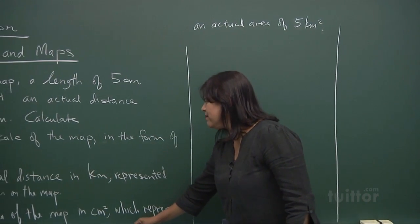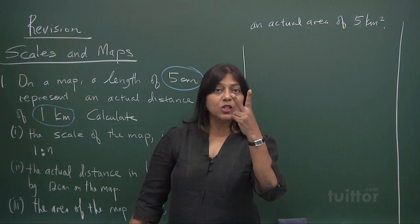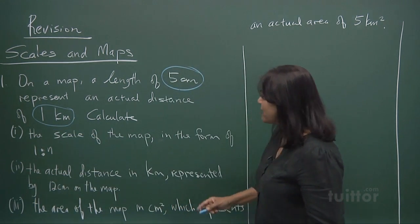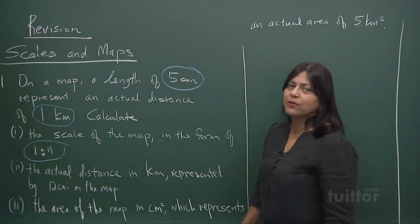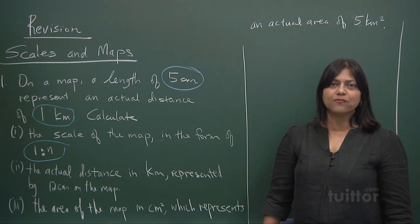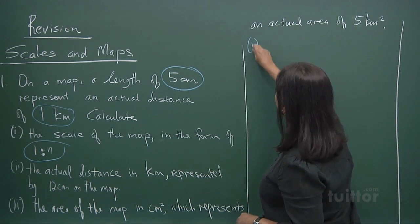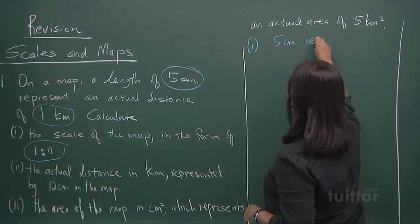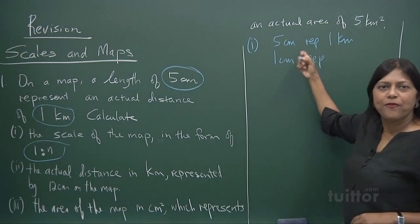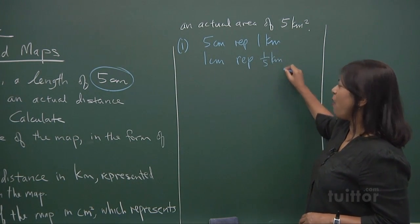How do you calculate the scale of the map in the form of 1 is to n? Then the actual distance in kilometer represented by 12 cm on the map, and the area of the map in cm squared which represents an actual area of 5 kilometers squared. Now let's look at it. What they said? 5 cm representing 1 kilometer, 10 cm represents 2 kilometers, right? 20 cm, 4 times of it will be 4 kilometers. Now they want you to express it in the ratio 1 is to n. This must be the same unit of measurement and it's for length, not for area. You cannot say 1 cm squared represents 4 kilometers squared. Then you can put it in terms, nope. It's for length. Let's get it right.